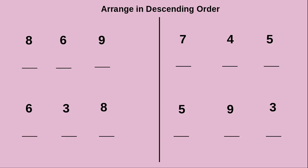Now we will see some examples of how to arrange numbers in descending order. First they have given 6, 8, 9. Descending order means arranging from greatest to smallest. The greatest number here is 9, so we place 9 first. After that the next greatest is 8. At last, 6 is remaining, so we write it as it is. Now we have arranged these numbers in descending order.